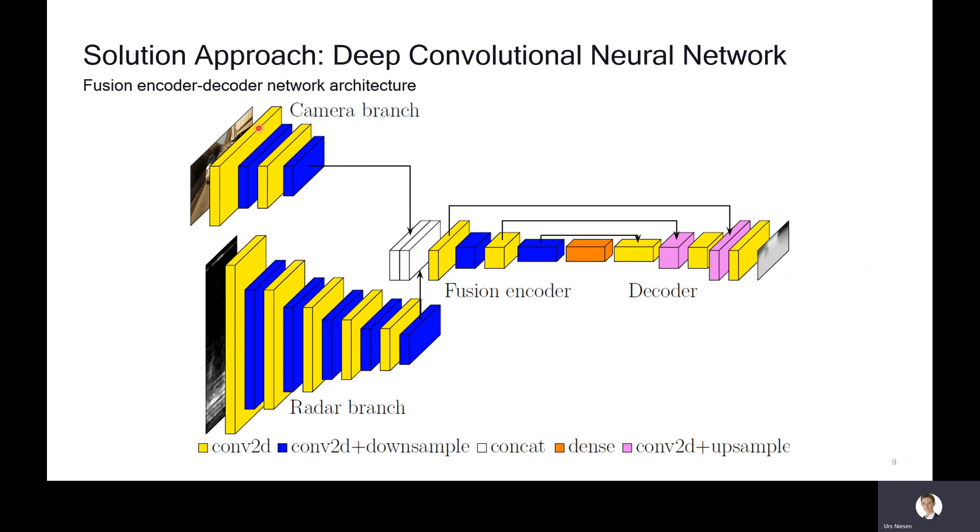I should point out that the aspect ratios of the two input images are vastly different. The camera image is wider than tall, and the radar image is a lot taller than wide. Part of the reason for using this two-branch fusion encoder is these two individual branches that downscale the input images in such a fashion that they can finally be concatenated.